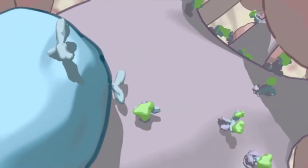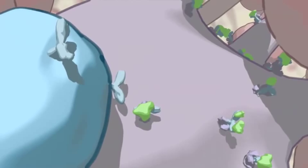The germinal center in which the centricytes are proliferating also contains follicular dendritic cells, FDCs, which present antigen on their surface. Competition for this limited quantity of antigen will provide the basis of selection among the centricytes.